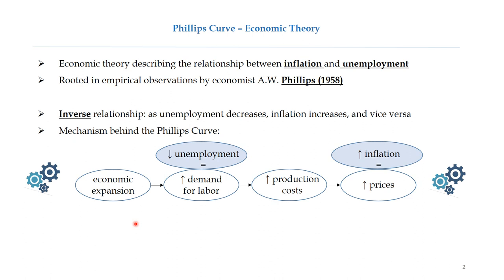The Philips Curve represents an economic theory describing the relationship between inflation and unemployment. It was in 1958 when New Zealand economist William Phillips empirically analyzed UK data to discover that there exists an inverse relationship between inflation and unemployment.